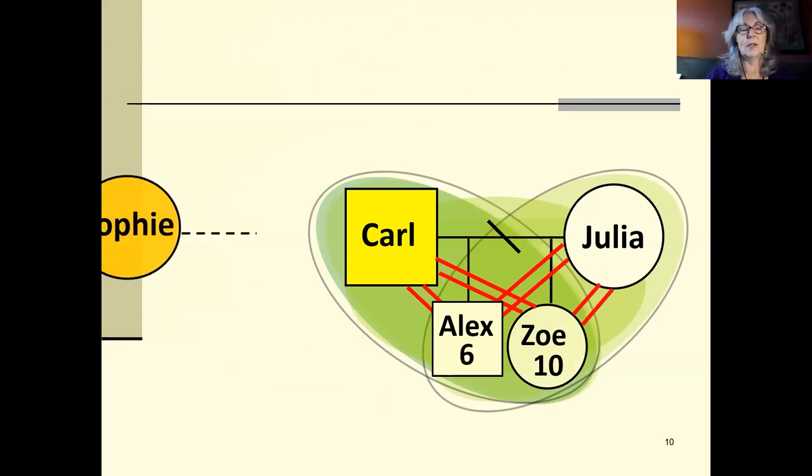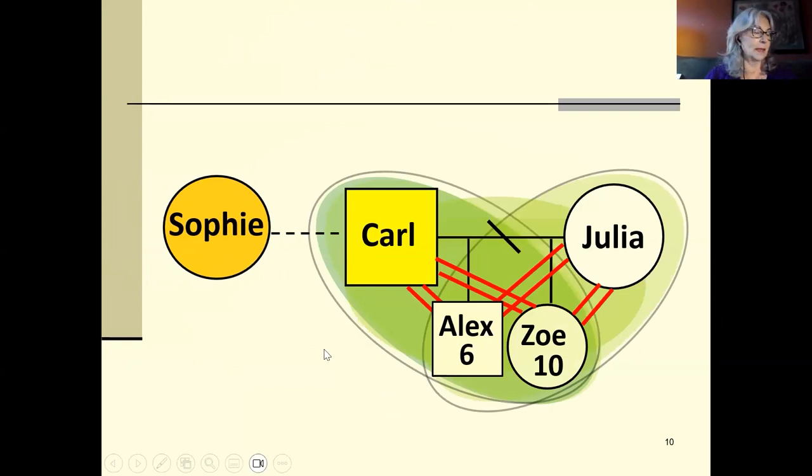But suppose things don't go well and there's a divorce. In the United States and probably in Canada, kids usually become part of two single-parent families. So this is what it looks like just before Carl starts dating Sophie. And as you can see, Sophie enters as an outsider to all of this, including Carl's ex-wife, Julia.